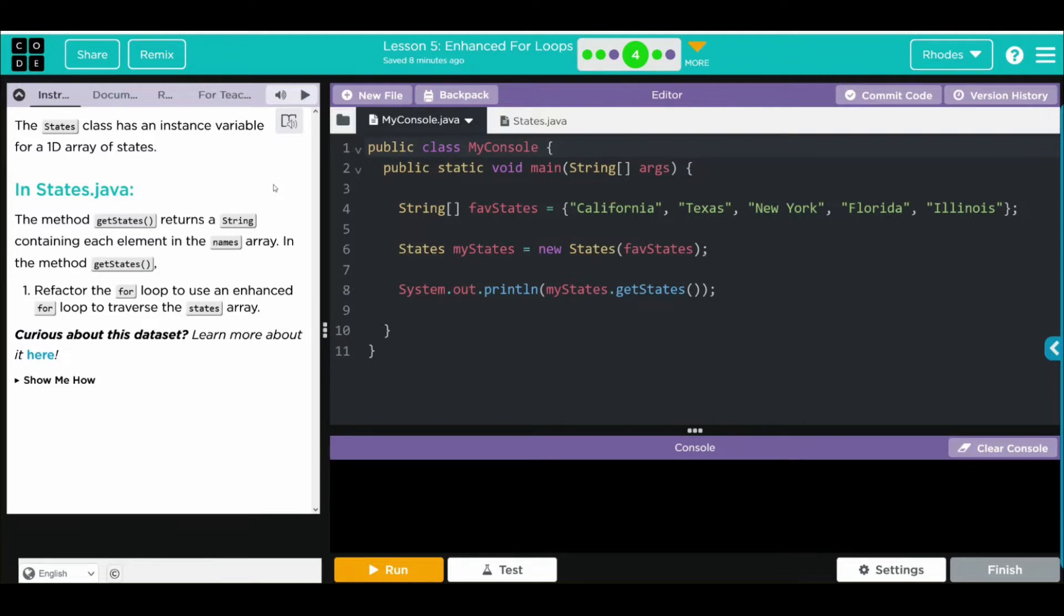The states class has an instance variable for a 1D array of states. In states.java, the method getStates returns a string containing each element in the names array. In the method getStates, we're going to refactor the for loop to use an enhanced for loop to traverse the states array. And as always, curious about where this data comes from? Check it out right there.